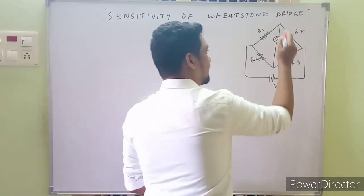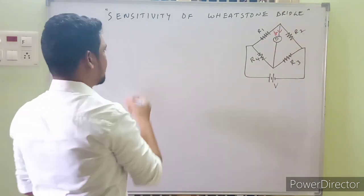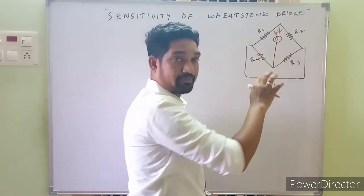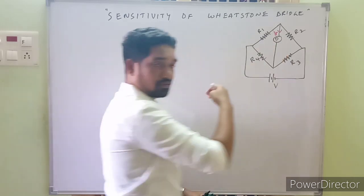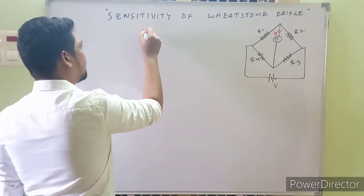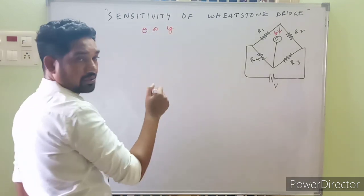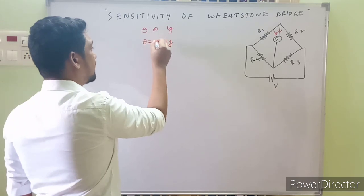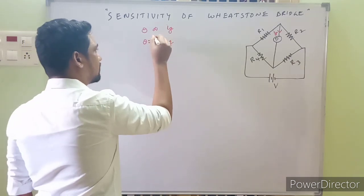The current through the galvanometer under unbalanced condition is IG. There is a relationship between the current and the deflection made by the pointer of the galvanometer — no current means no deflection, and more current means more deflection. In equation form, the deflection theta is directly proportional to IG, so theta equals SI times IG, where SI is the current sensitivity of the galvanometer.